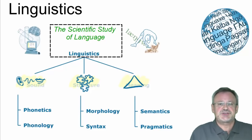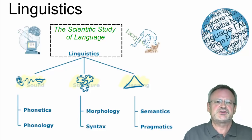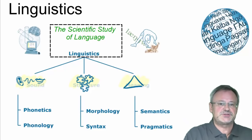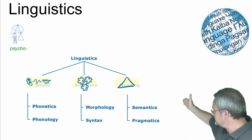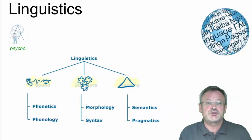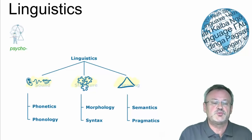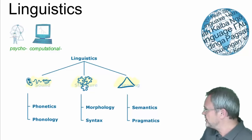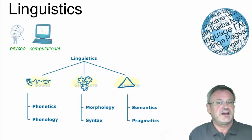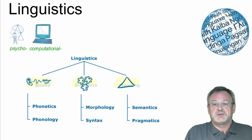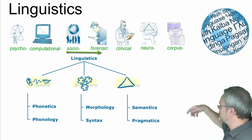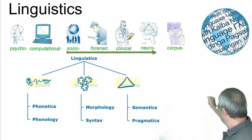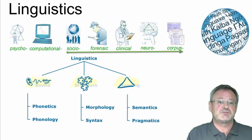In addition to these central branches, there are numerous hybrid disciplines which combine their central research questions with those in linguistics. Psycholinguistics is a combination of psychology — the study of the human mind — and linguistics. Or computational linguistics, a combination of computer science and language study. And many more, for example sociolinguistics, forensic linguistics, clinical linguistics, neurolinguistics, and corpus linguistics, to name just some of them.